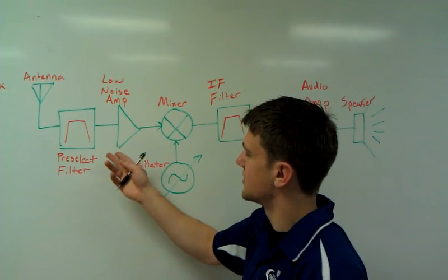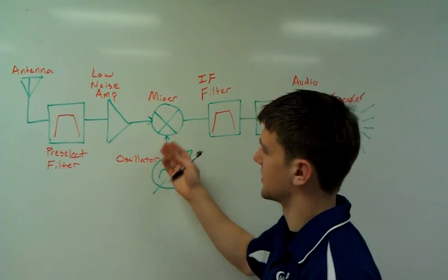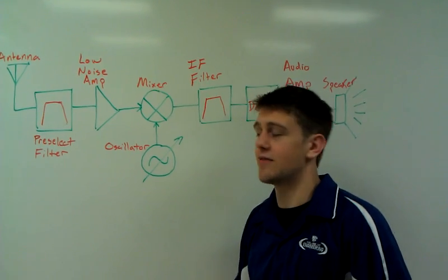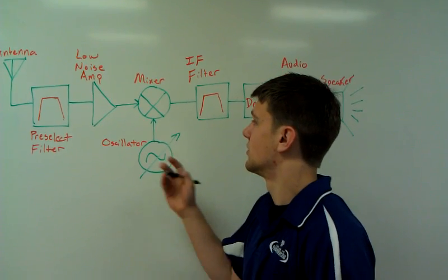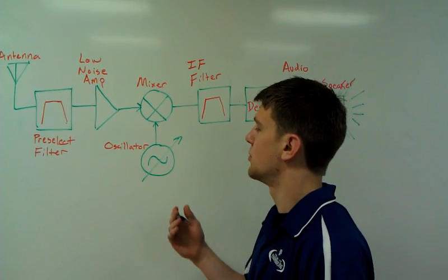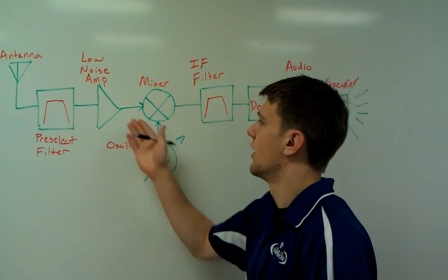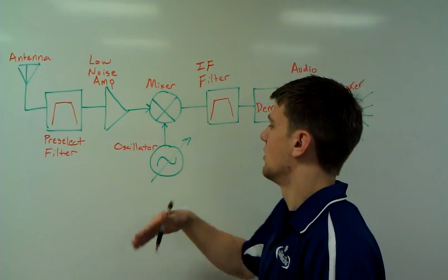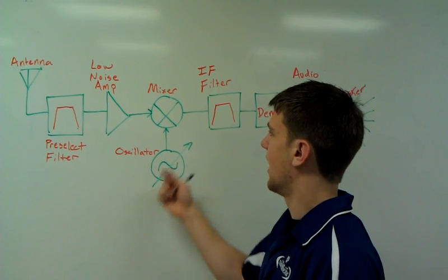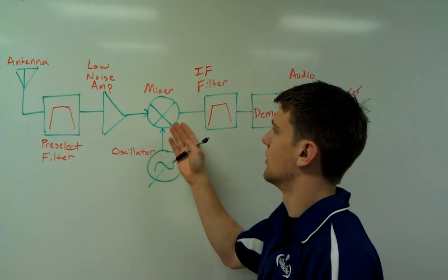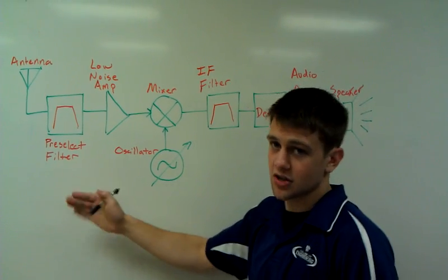We then amplify that signal, and it goes to a mixer. A mixer takes the sum and the difference of your two input signals. So our two input signals here are our oscillator and our FM band. We can tune our oscillator to change the output of the mixer here so that we can select a different station.